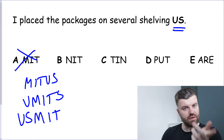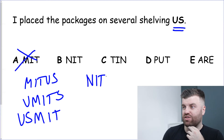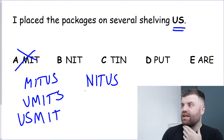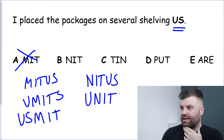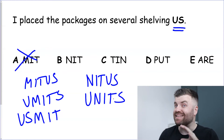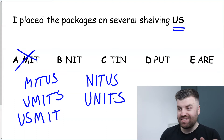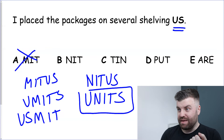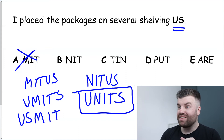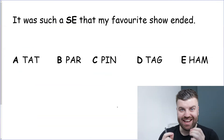Let's try option B — KNIT. KNITUS doesn't work. But if we put U at the start, then KNIT, then S — we get UNITS. That is a word! And does it make sense? 'I place the packages on several shelving units.' Yes — shelving units are a thing, it makes sense in the sentence, and it's spelled correctly. The answer is B.